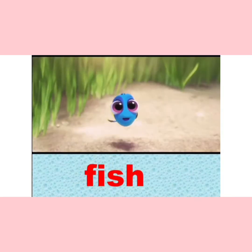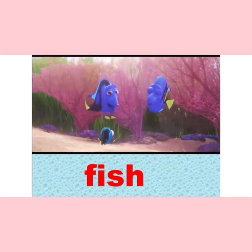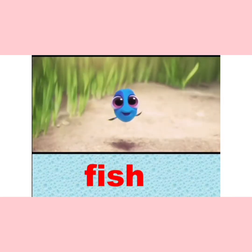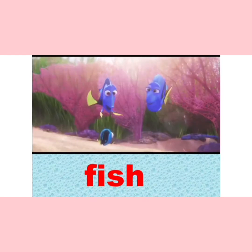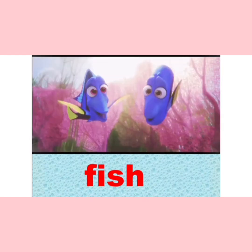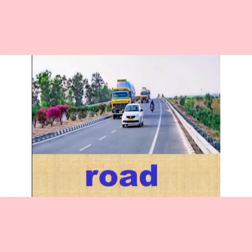These are fish. Fish live in water. Children, when you want to go to market or school or any other place, you use a vehicle to travel. But where does the vehicle move? It moves on a road.